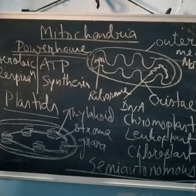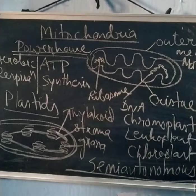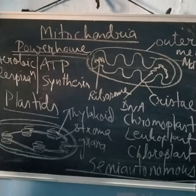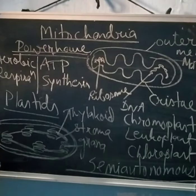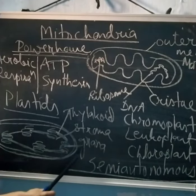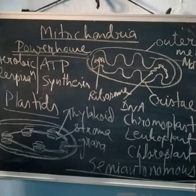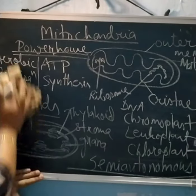Chloroplasts are green plastids containing chlorophyll and carry out photosynthesis, which is the major function of plants to produce food. The key difference between mitochondria and chloroplast: mitochondria carry out aerobic respiration while chloroplast helps in photosynthesis. Mitochondria consume oxygen and release CO2, whereas chloroplasts consume CO2 and release oxygen.